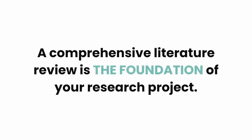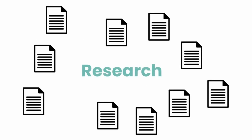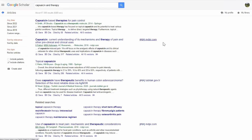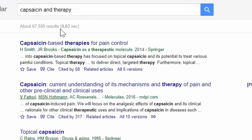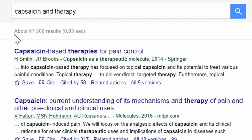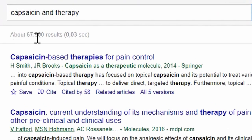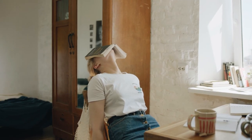A comprehensive literature review is the foundation of your research project. Conducting a literature review is about making connections with the related works and with your own research. It is simply impossible to search and read everything that has been written and published on a topic. It can be an overwhelming task.